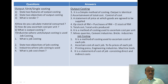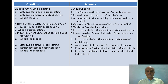The next topic is job costing. What is job costing? It is a method of costing used to ascertain the cost of each job. The two objectives of job costing are: first, ascertainment of cost of each job; second, to fix the price for each job.